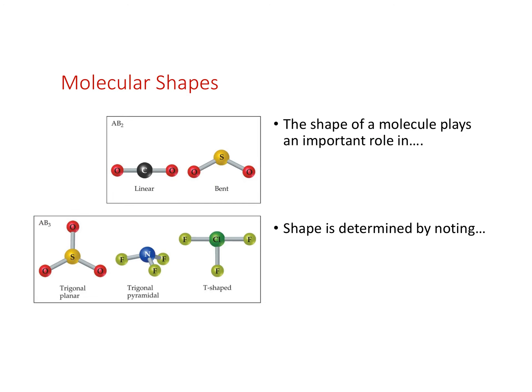This is important because, looking at CO2 and SO2, we might think they have the same molecular shape since both have one central atom and two flanking oxygens. That's not true. Carbon dioxide is linear, whereas sulfur dioxide is bent. As a result, they have different properties. The shape of a molecule plays an important role in determining reactivity and physical properties like boiling point.